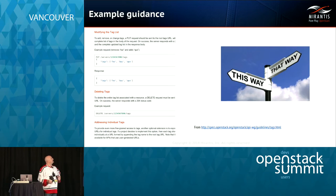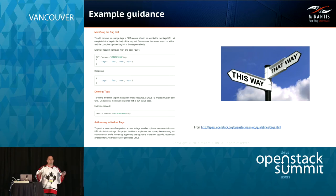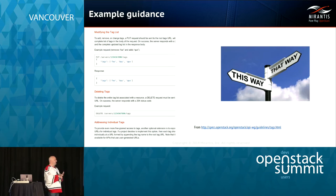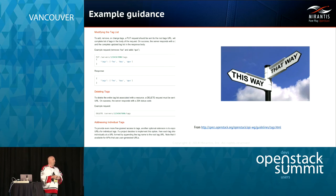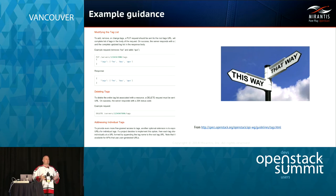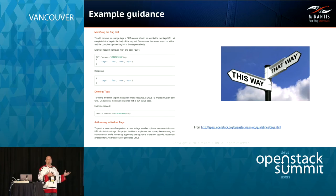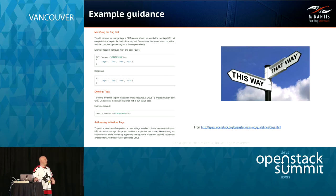Here's some example guidance — this comes from how to do tagging. A couple of projects have implemented simple string tagging; Glance has, and Nova has a series of patches going through that implement server tagging. We wanted to make sure we had guidance so that folks submitting these patches have something to look at to determine how to make their REST API consistent with how other projects are doing it.